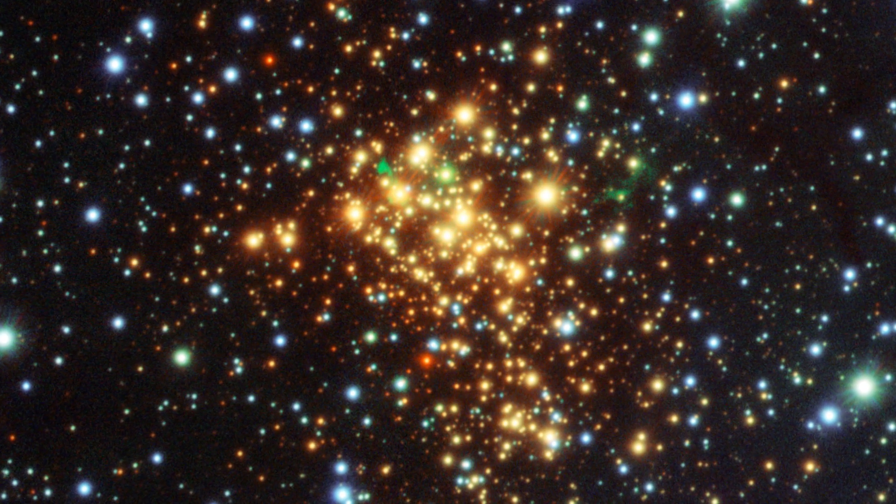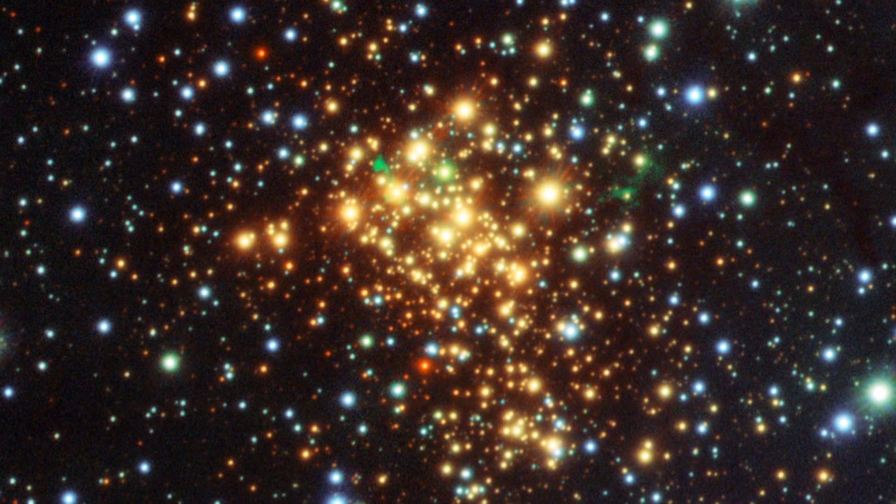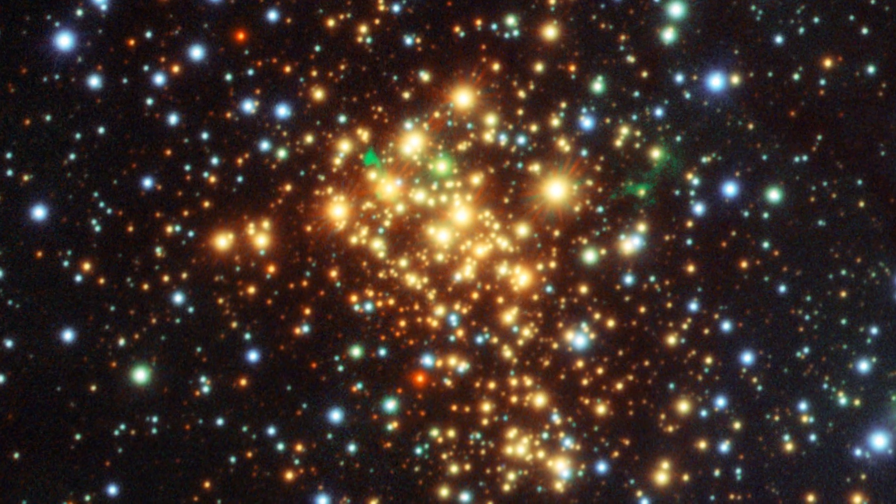Had Messier had infrared vision, it would have leapt out as being one of his top non-comets in his catalogue. But because he was looking in the optical, it's one that actually has been hidden in plain view for many decades.